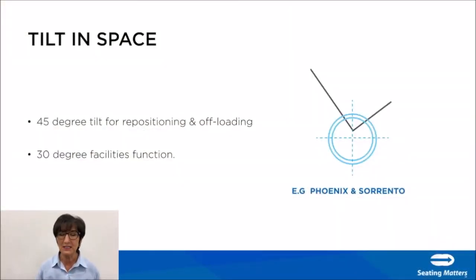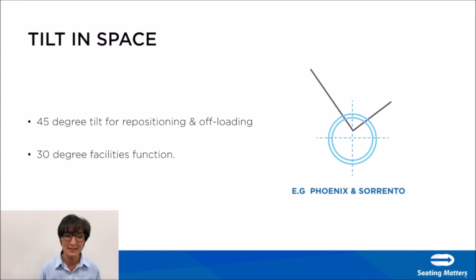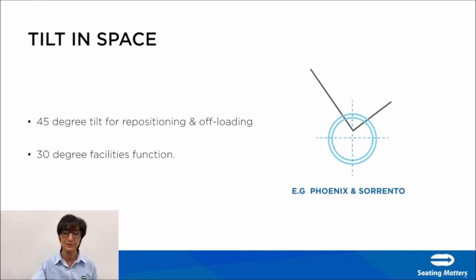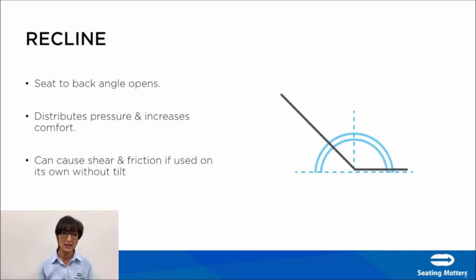Research with Ulster University found that 45-degree tilt is the most beneficial position for offloading the ischial tuberosities and for repositioning. A 30-degree tilt will increase and facilitate function, but 45-degree tilt is essential to offload the bony areas. Tilting space is therefore a really important feature for pressure management. Opening up the back angle of the chair increases comfort and redistributes pressure, but it can cause shear and friction if used alone, so recline should always be used in association with tilt.